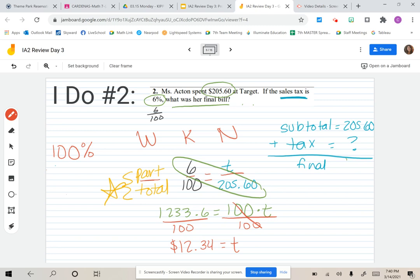If the tax is $12.34, I know that's not her final bill. That is the tax we're going to add to our total. So $12.34, and now we add those together, and we get $217.94.